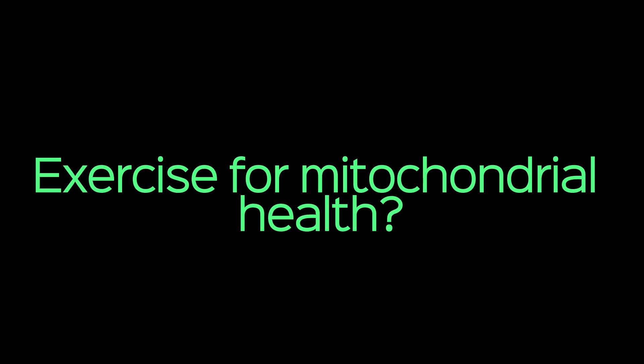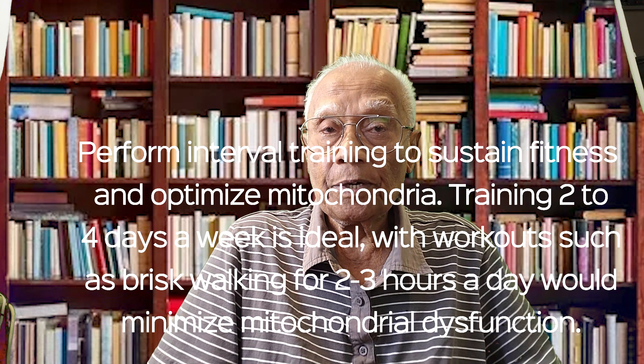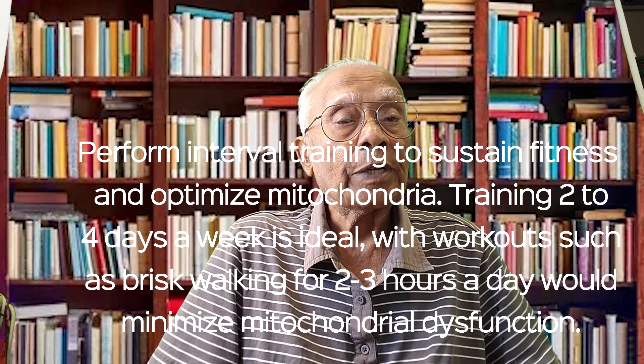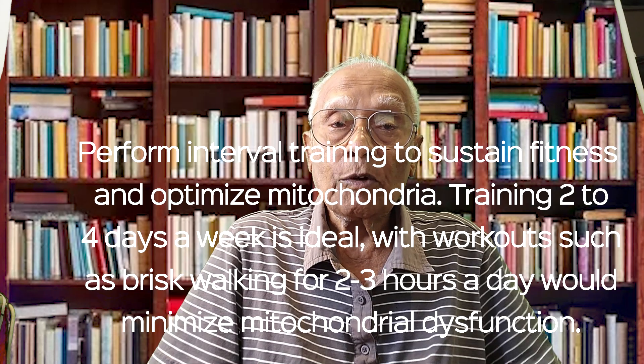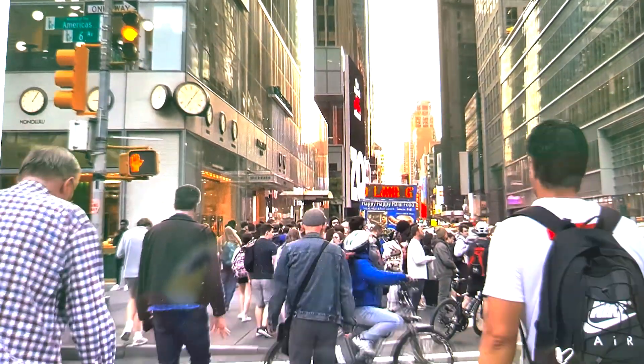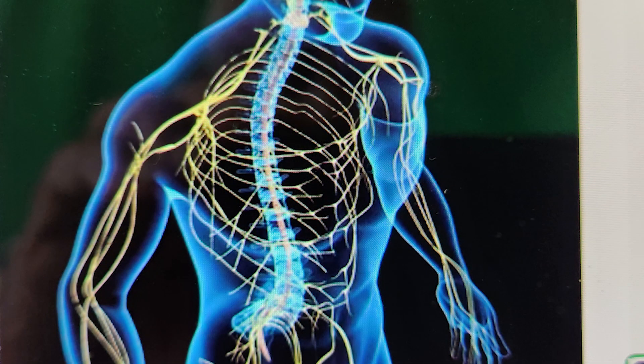Exercise promotes mitochondrial health. Performing interval training helps sustain fitness and optimize mitochondria. Training two to four days a week is ideal, with workouts such as brisk walking for two to three hours a day to minimize mitochondrial dysfunction. Exercise makes you stronger, quicker, and smarter. It fixes your metabolism, protects your nervous system and other organs, and boosts your mood — helping dysfunctional mitochondria return to normal function so every cell can store and provide energy when required.